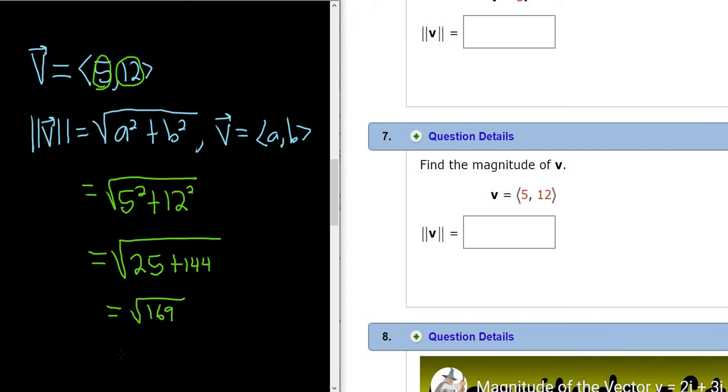And the square root of 169 is equal to 13. So 13 is the magnitude of this vector, or the length of this vector.